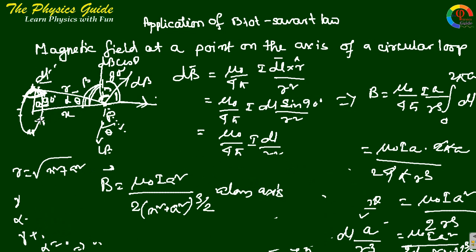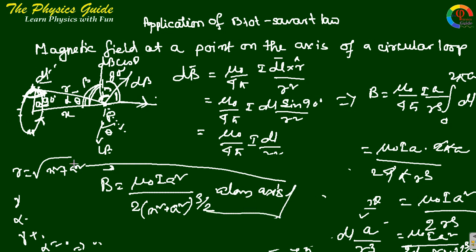If the current direction is reversed, the direction of the magnetic field reverses accordingly. This is the magnetic field due to a current-carrying circular loop at a point on its axis.